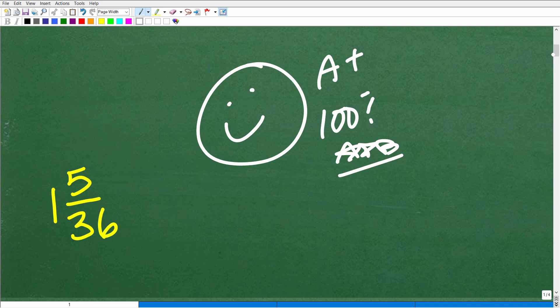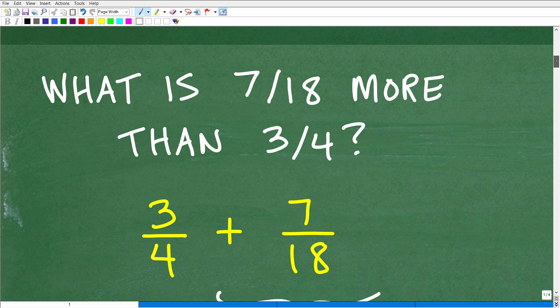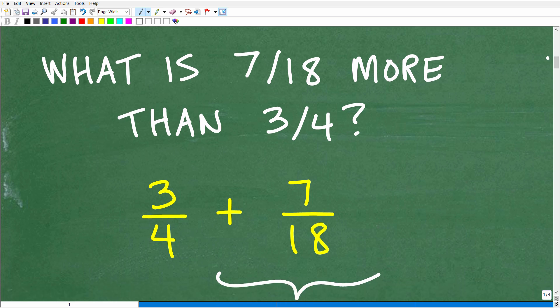So let's go ahead and get into this problem. We first have to just kind of read the problem. Now, it seems a little bit confusing. We're like, what is 7/18 more than 3/4? And some of you might be saying, why can't we just say what you want to say, don't make it any more confusing than it has to be.